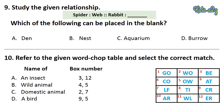Question 9: Study the given relationship. Spider is to web, then Rabbit is to dash. Which of the following can be placed in the blank? The answer is Burrow. Question 10: Refer to the given word chop table and select the correct match. The answer is Option D — a bird, Box 9 and 5.